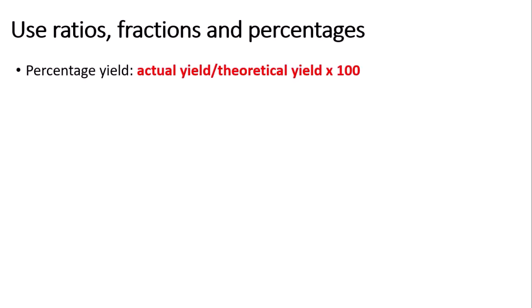The next key skill is to use ratios, fractions and percentages with confidence. The first thing is percentage yield, which comes up in questions about crop growth. Percentage yield is your actual yield divided by the theoretical yield times 100. For example, if you had 2.5 grams of something but the theoretical yield was 5 grams, you do 2.5 divided by 5 times 100, which gives a percentage yield of 50%.